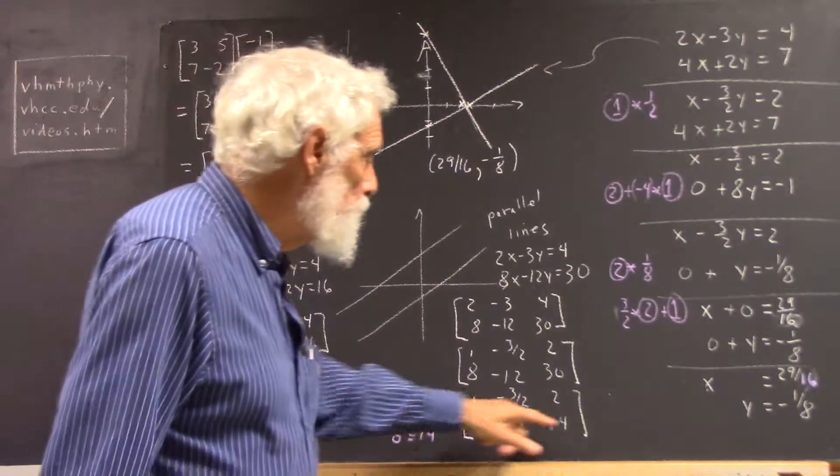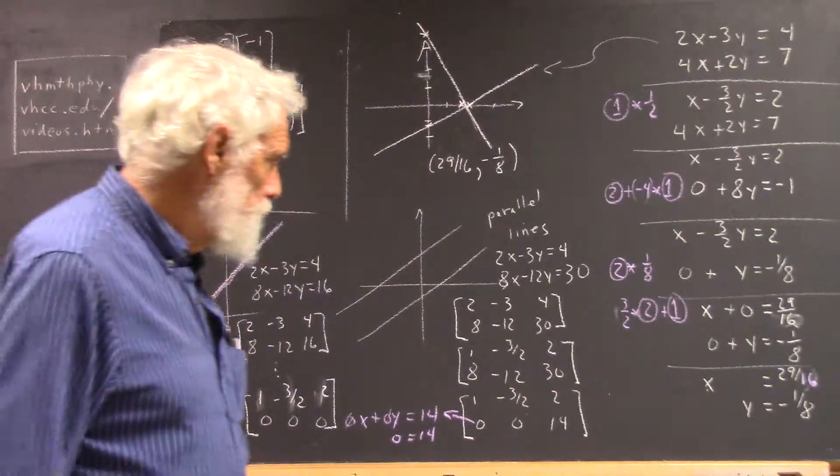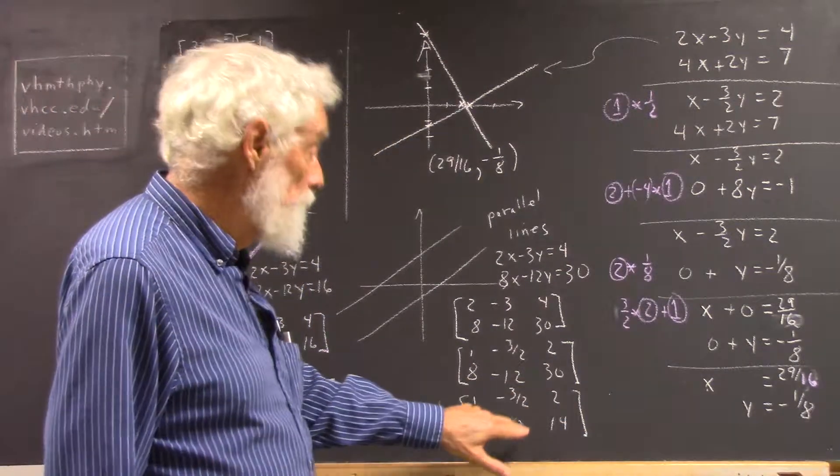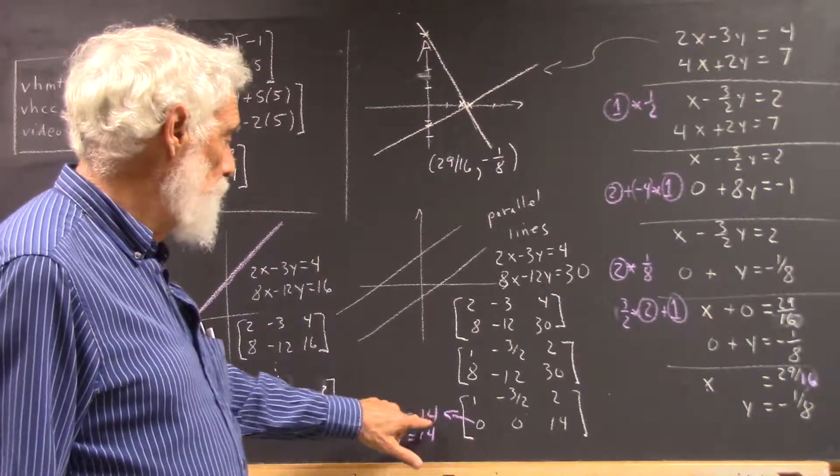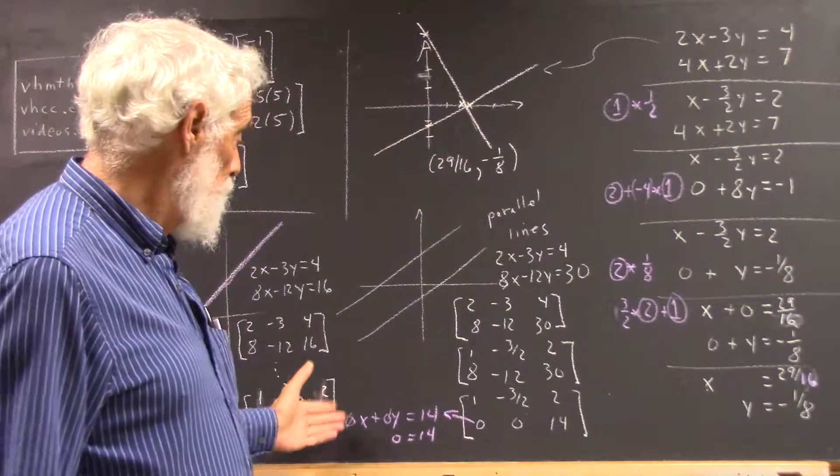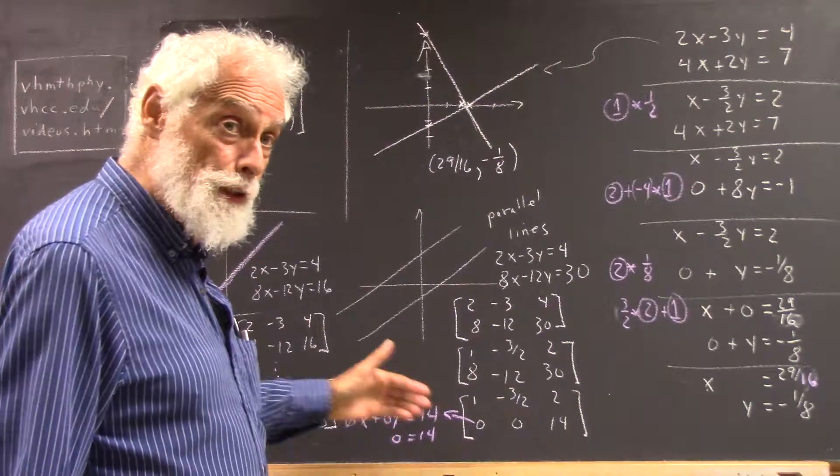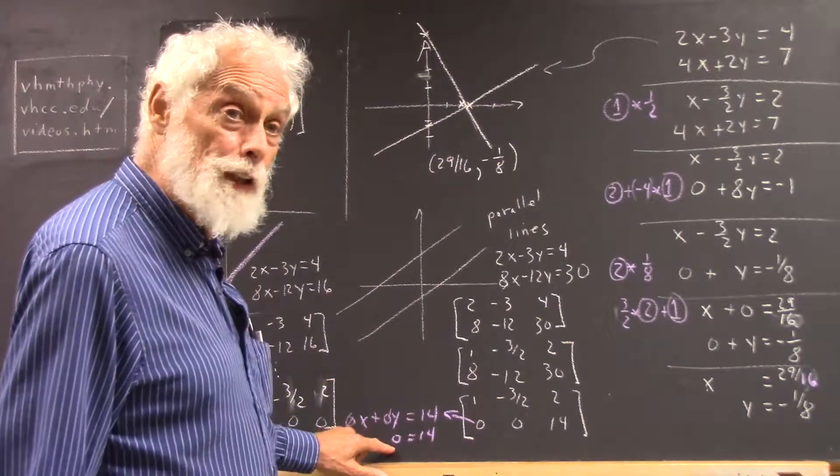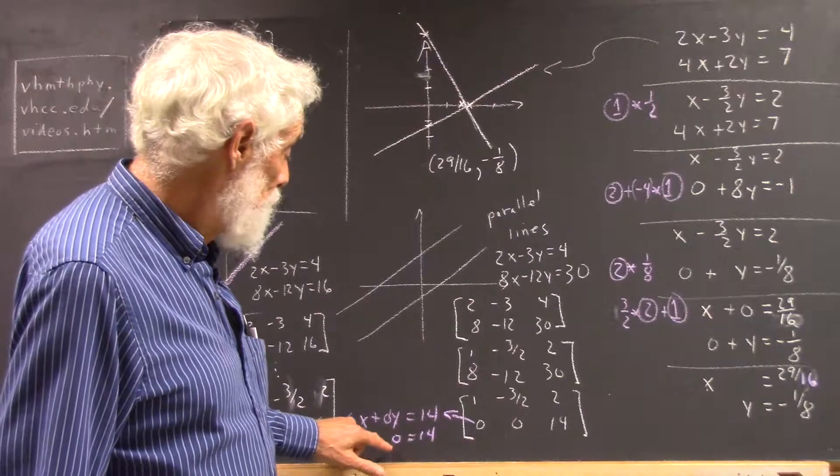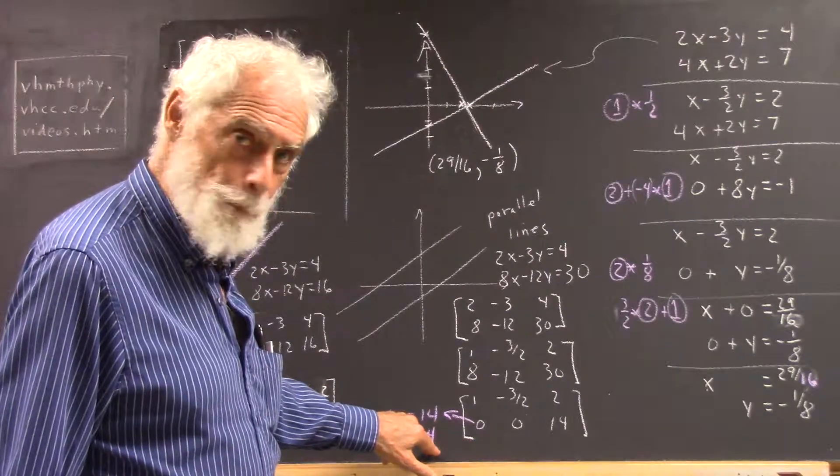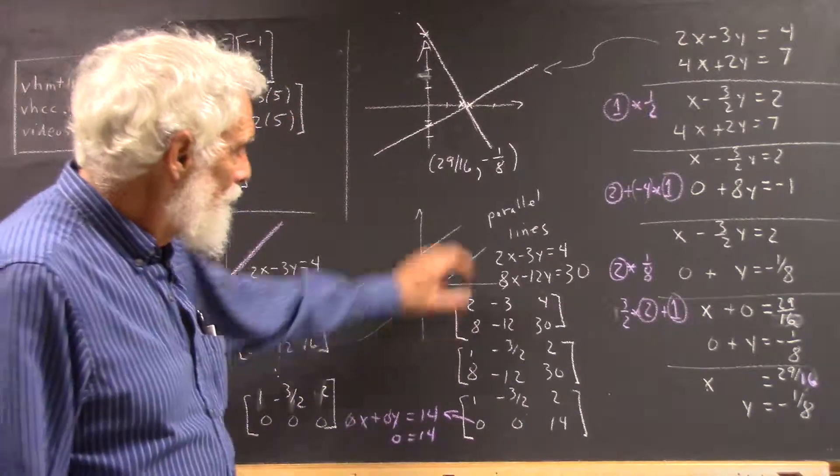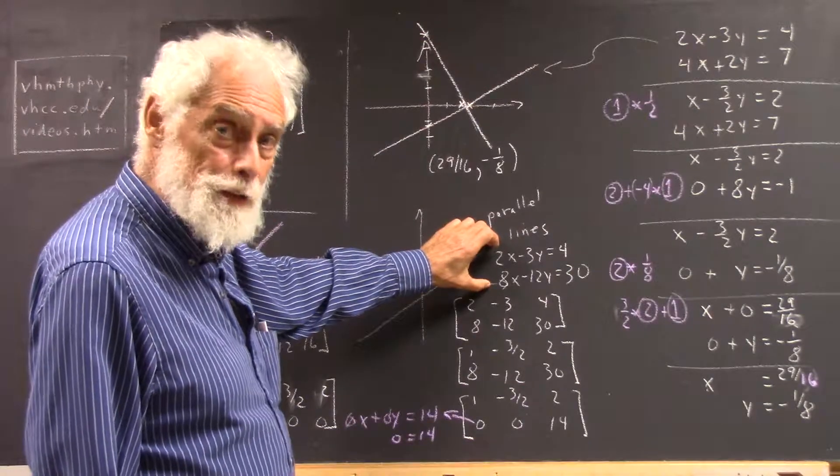So what does this equation mean? Well, this equation means 0x plus 0y equals 14. 0x plus 0y equals 14. Well, 0x is 0. 0y is 0. So the left-hand side is 0. So it says that 0 equals 14, but 0 can't equal 14, which means that these equations can't intersect.